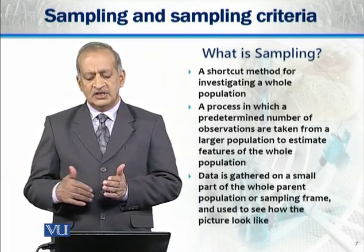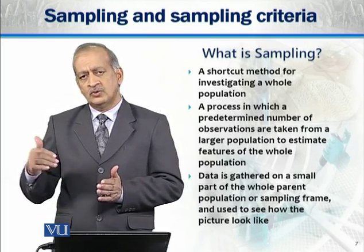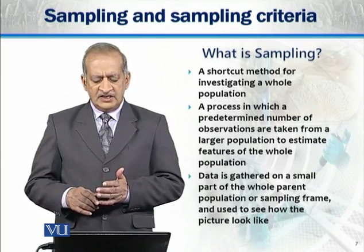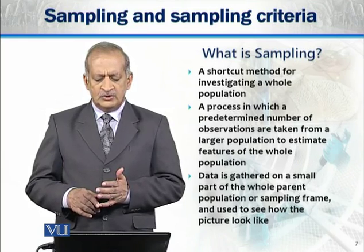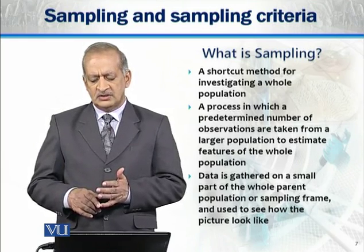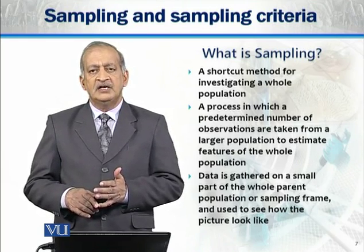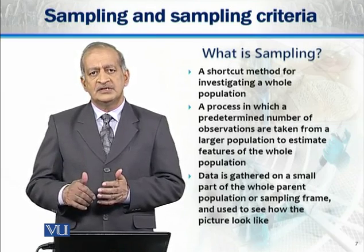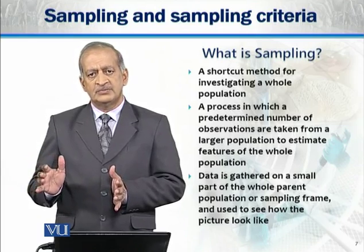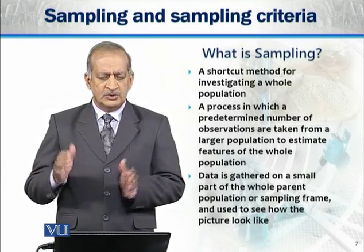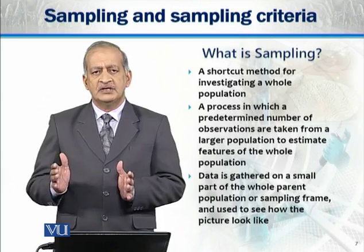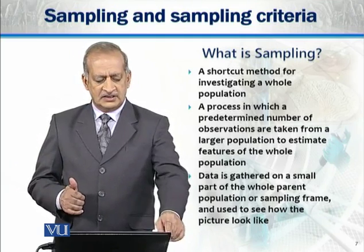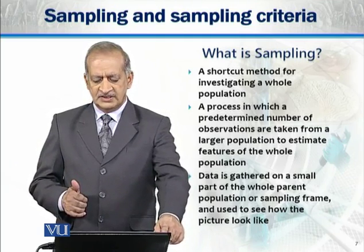We have a pre-determined number of observations to conduct study on. Data is gathered on a small part of the whole parent population, or sampling frame, and it is used to see how these things look like on a broader spectrum — on a population level — and then we see how we can implement it at a larger level.